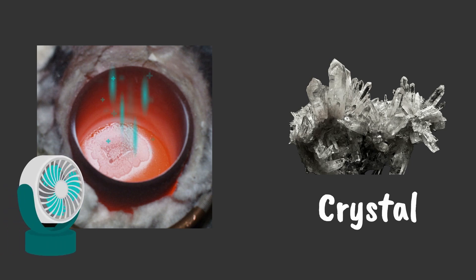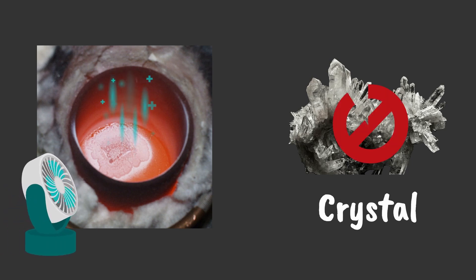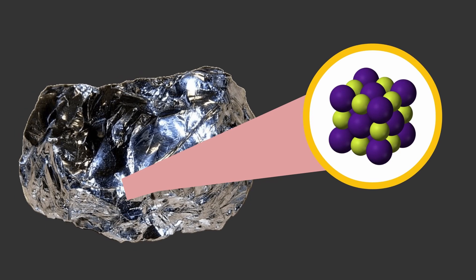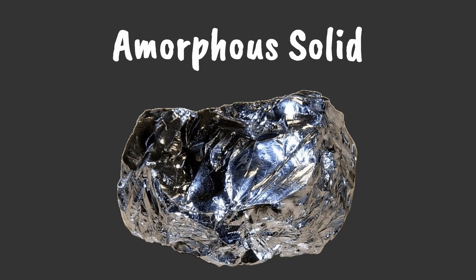But if you rapidly cool the molten silica, this prevents it from forming crystals, effectively freezing the silica molecules in place. Now, instead of a quartz crystal, you have made what is called an amorphous solid.